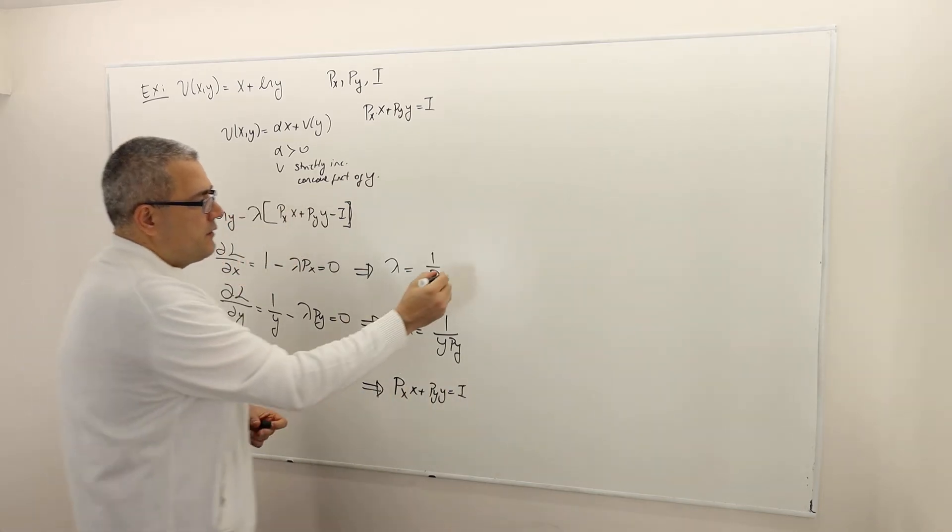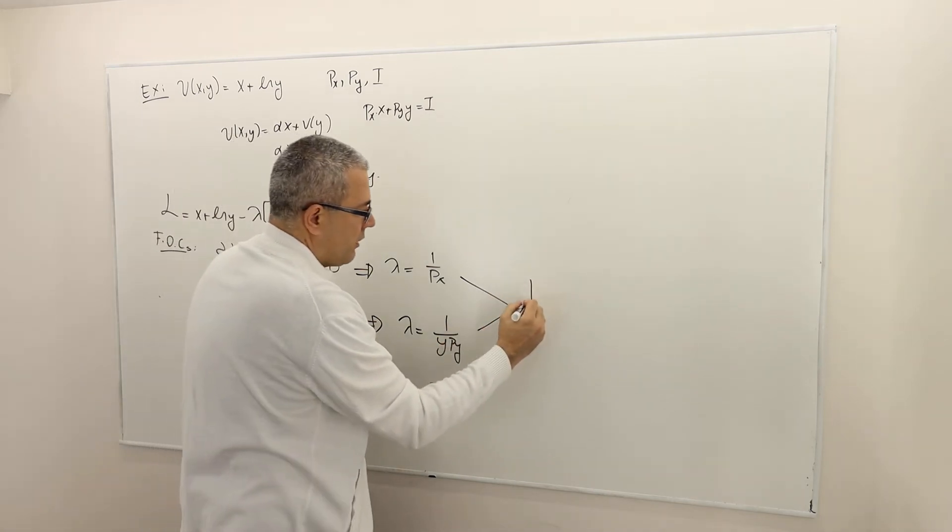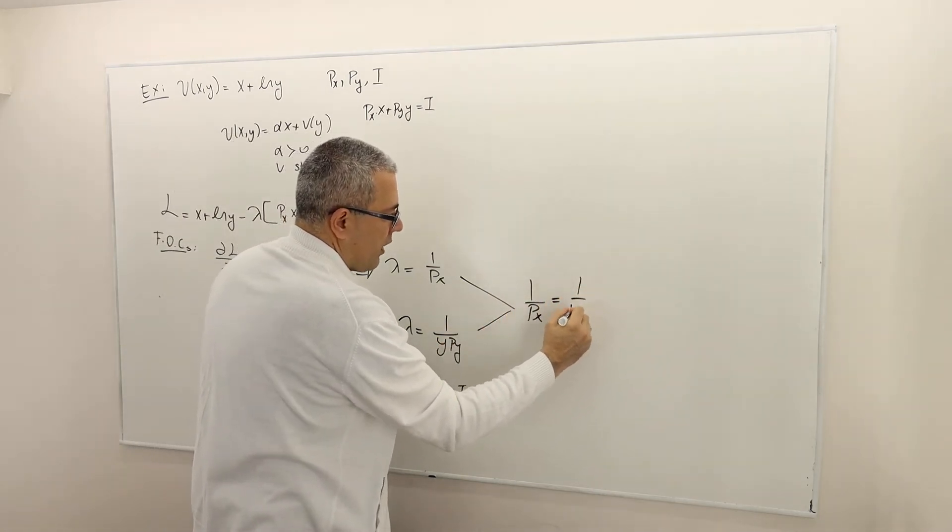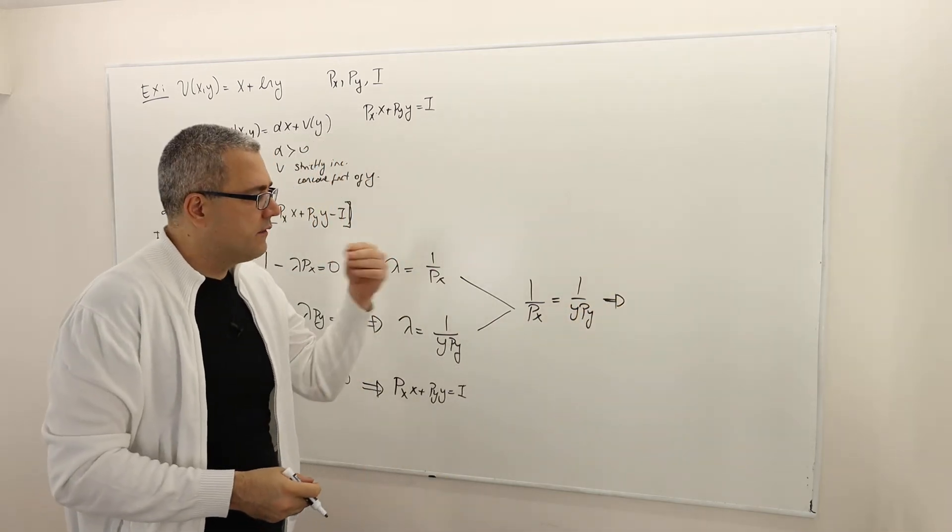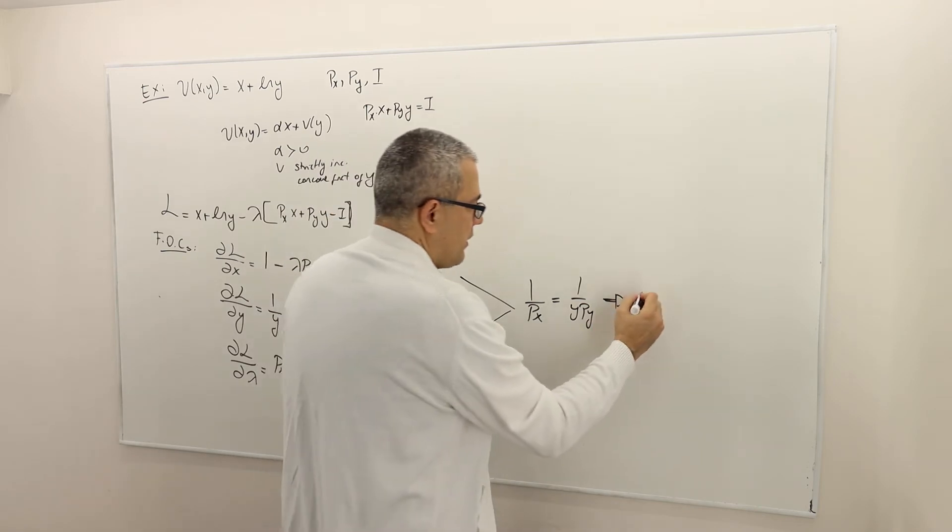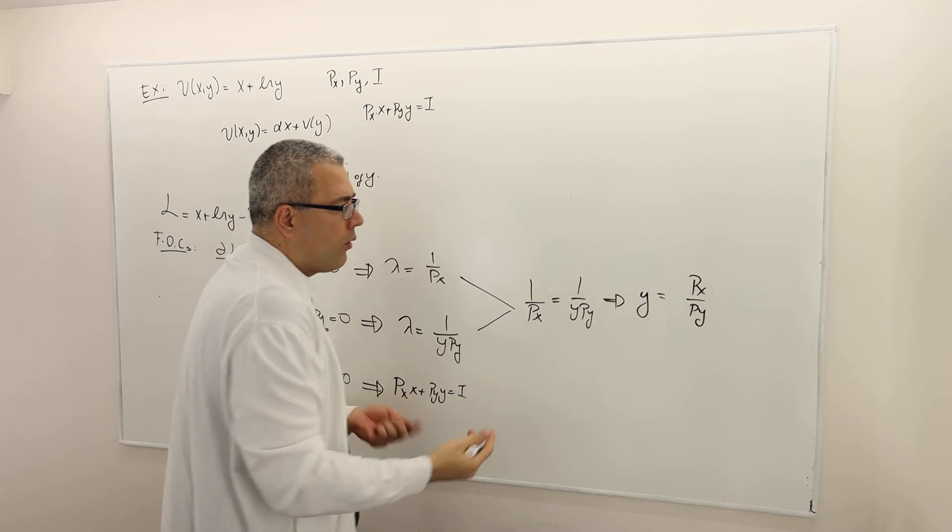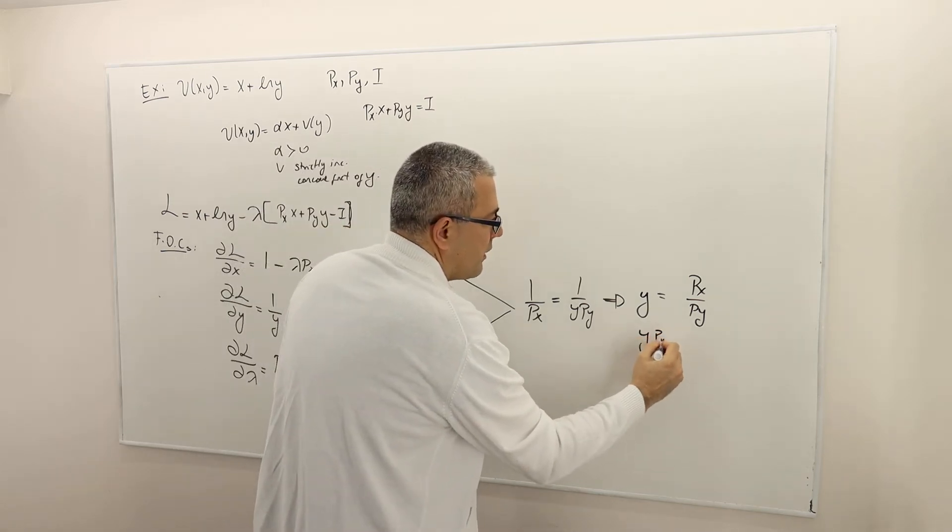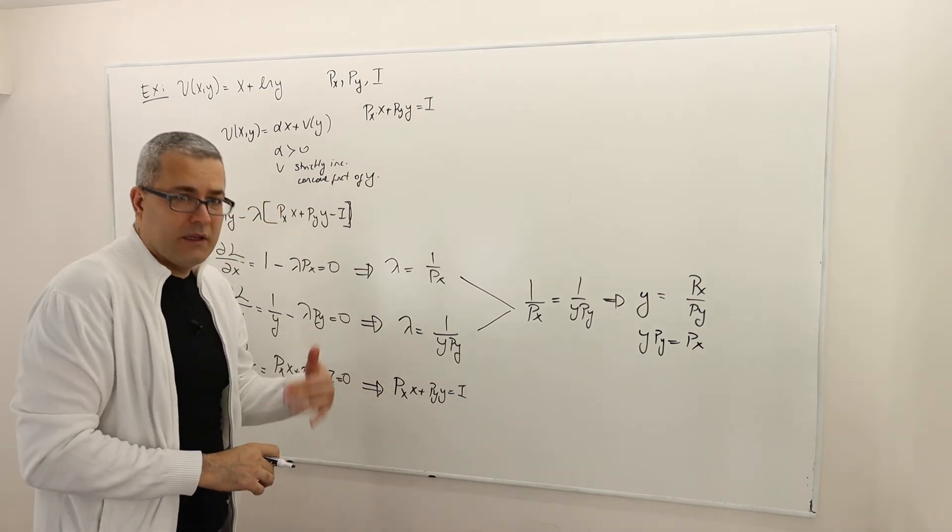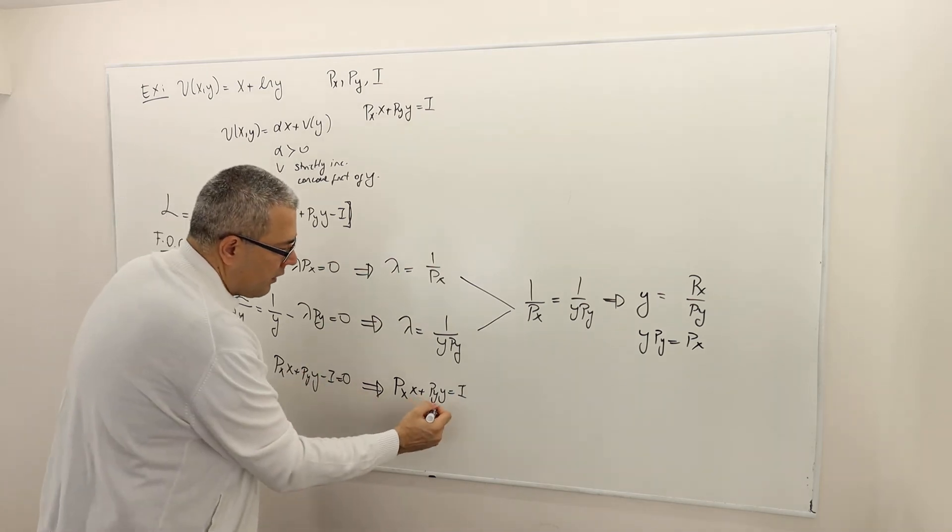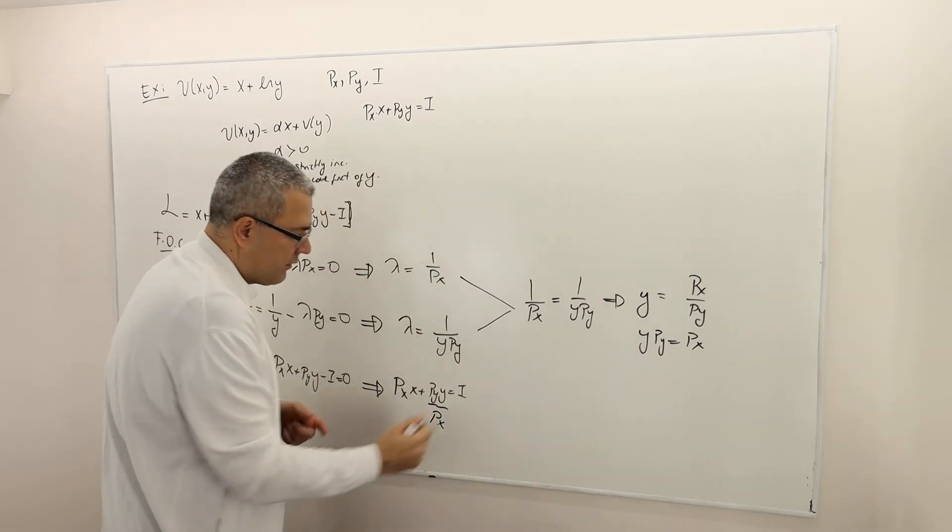From these two I can generate the following equality: one over px equals one over y·py, which actually means I just want to write y as a function of px and py. So that means y equals px divided by py, or y·py is just equal to px. That's better because later in the next step I'm going to write instead of py·y this term, which is px.